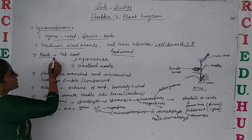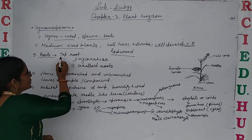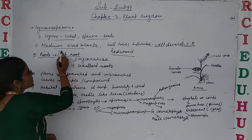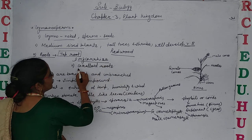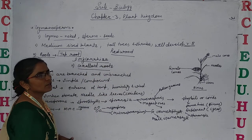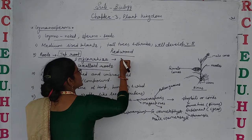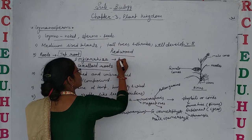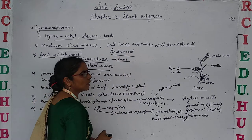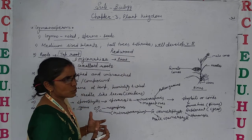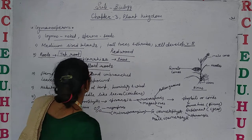Roots are mainly divided into two types: tap roots and mycorrhizal roots. The roots living in close association with fungi are known as mycorrhiza, as present in pinus. They help in absorbing nutrients and minerals from the soil and translocating them into the plants.